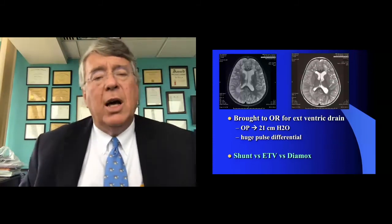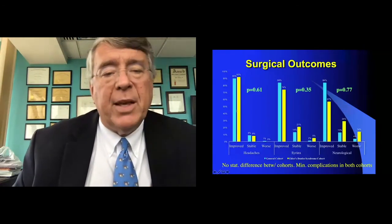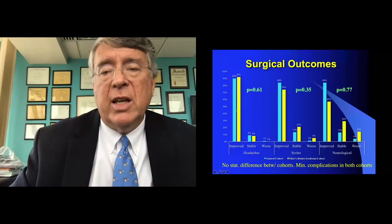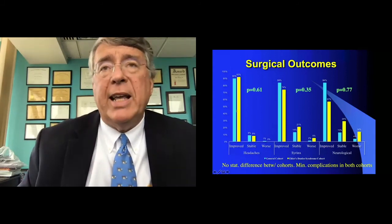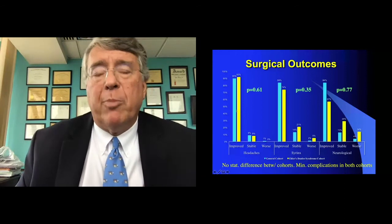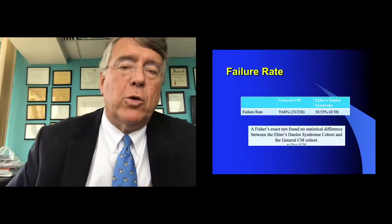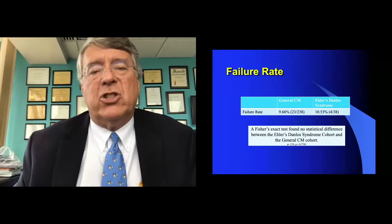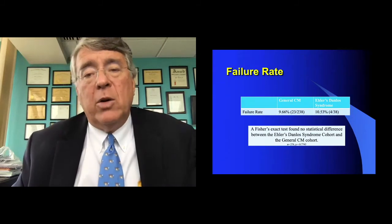How do these patients do? Looking at outcomes: 90% of patients in both groups were better with respect to headaches. 84% and 74% were better with respect to syrinx and neurological symptoms respectively — the numbers were small and there's no statistically significant difference between groups. Both EDS patients and general patients had similar improvement, and complications were in the low single digits for both groups. Looking at failure rates over 16 years, it's just shy of 10% overall; the Ehlers-Danlos patients are at 10.5% — statistically no difference.